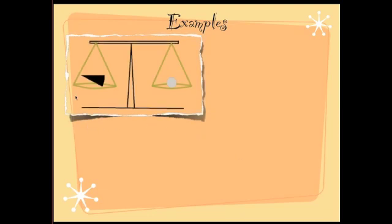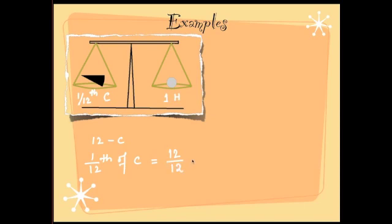Here is an example: one-twelfth of one carbon atom on one side and one hydrogen atom on the other side — their masses are equal. We know the mass of carbon is 12, and one-twelfth of 12 equals 1. Therefore, the atomic mass of hydrogen is equal to 1.